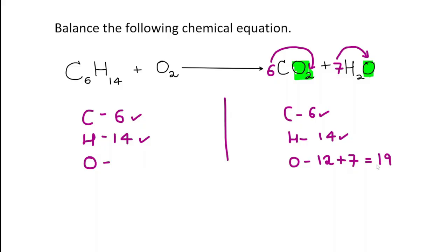How do we balance on the left-hand side? Whatever number you put here is doubled because it's O2. So what number should I really put there? We should put half of 19. Half of 19 is 9.5. If you leave it like this in a GCSE exam, you're okay. You will get marks.